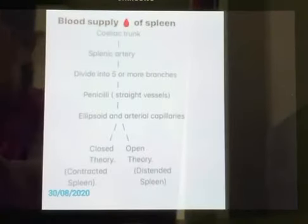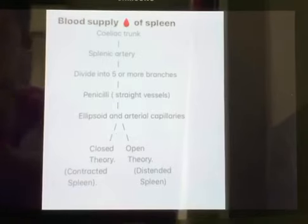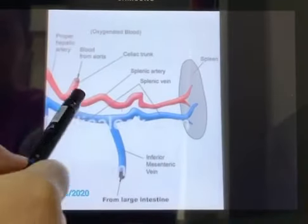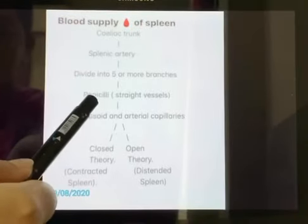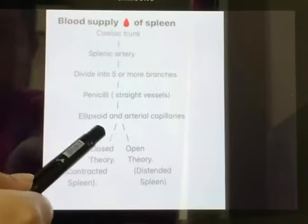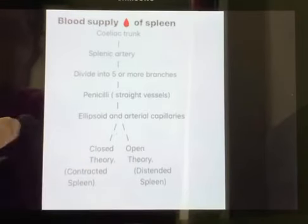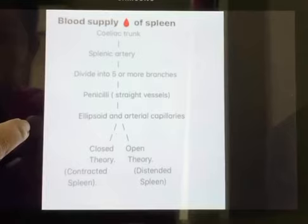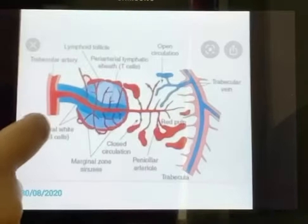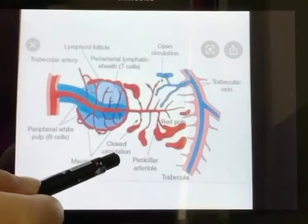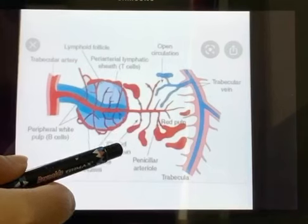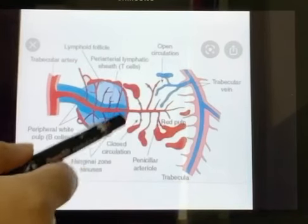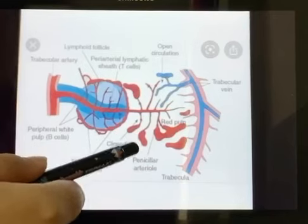Now let's talk about the arterial supply of the spleen. The spleen is supplied by the splenic artery, which is the largest branch of the celiac trunk. This artery is tortuous and coarse to allow movements of the spleen, as seen here. The artery divides into five branches which later form straight vessels called penicilli, and these penicilli divide into ellipsoids and arterial capillaries. The closed circulation theory states that the capillaries are continuous with the venous sinusoids lying in the red pulp, and these sinusoids join together to form the veins.